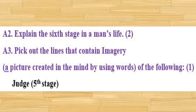Let's see activity number A2: Explain the sixth stage in a man's life. Next activity, A3: Pick out the lines that contain imagery — that is, a picture created in the mind by using words — of the following: Judge, fifth stage.